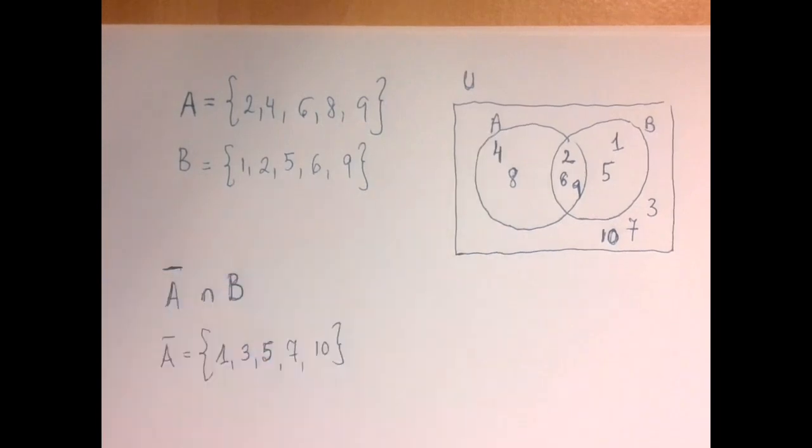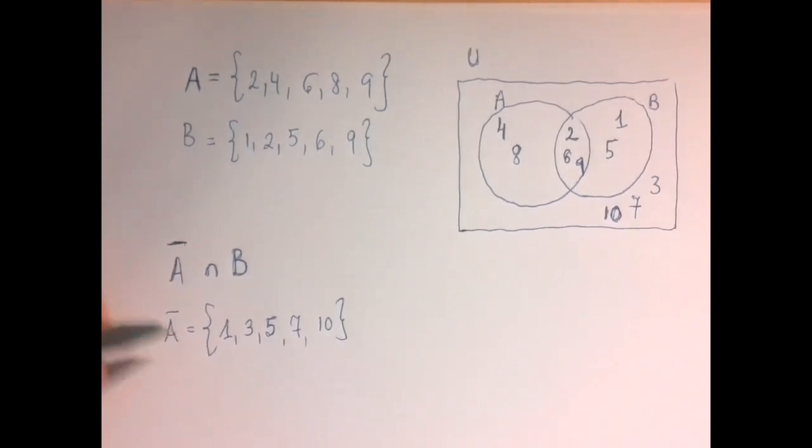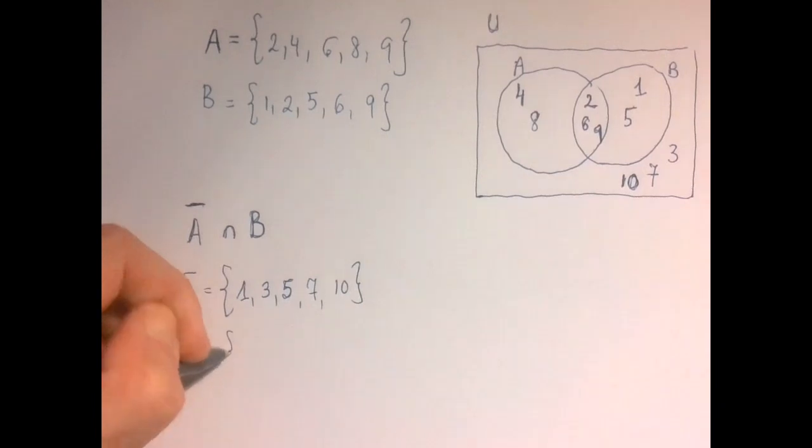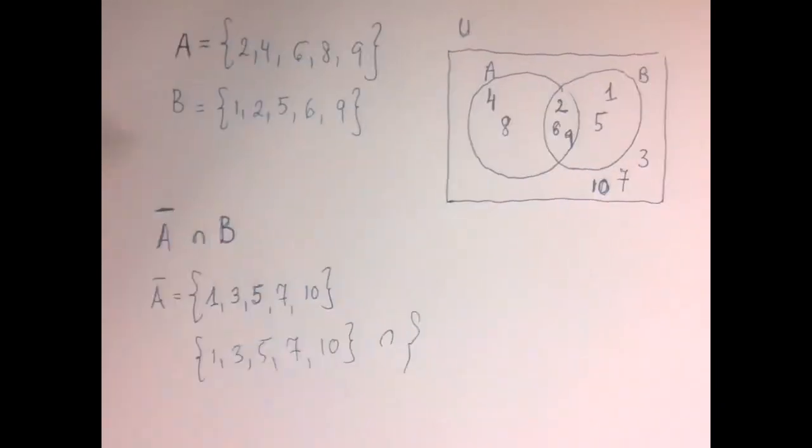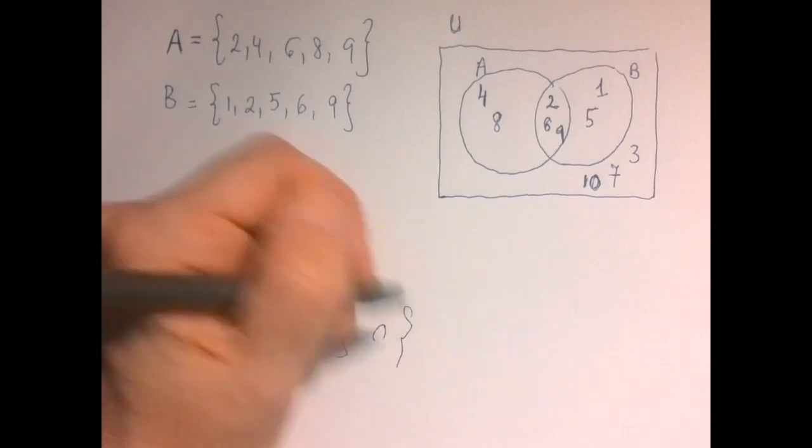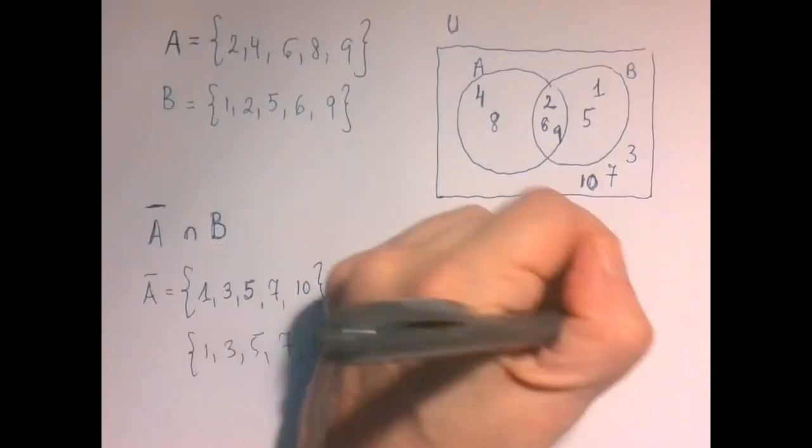So eventually we're just going to be able to look at the Venn diagram and see that. We're going to take the intersection of the complement of A and B. So that would be the intersection between 1, 3, 5, 7, 10 and B, which is 1, 2, 5, 6, 9.